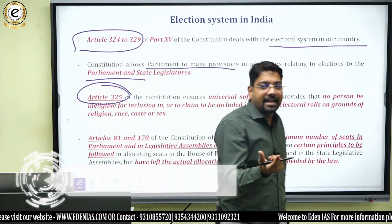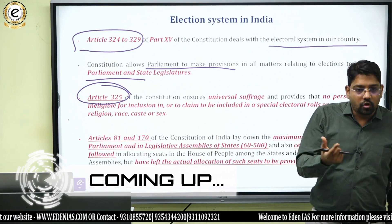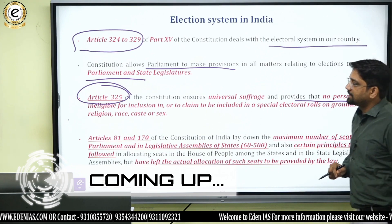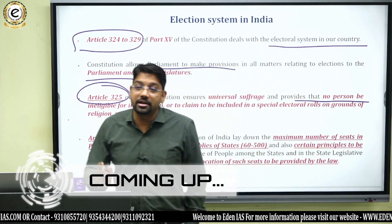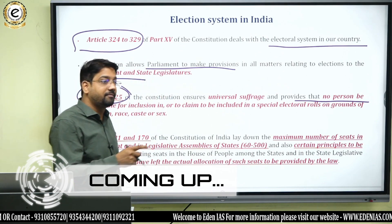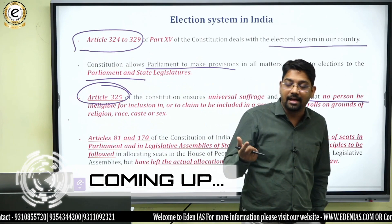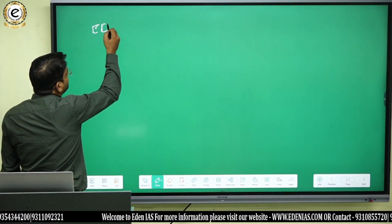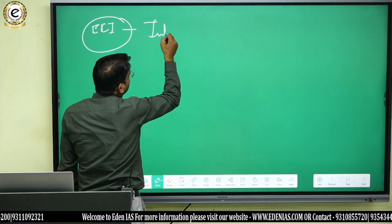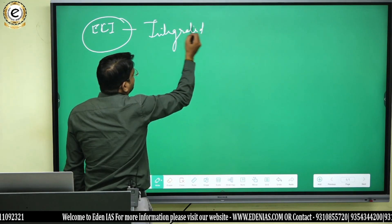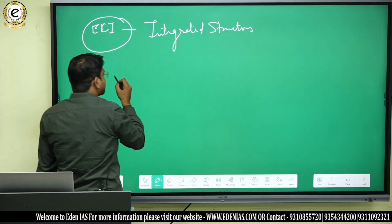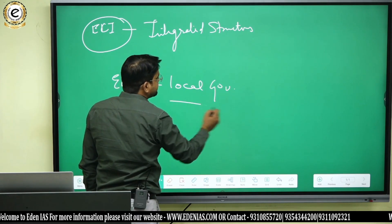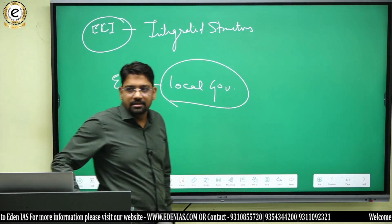Universal suffrage is why the right to vote is our constitutional and legal right. The constitution provides that no person be ineligible, which is why it is mentioned in the constitution. Despite the fact that the Indian Parliament has its own law to regulate elections, the Election Commission of India also has an integrated structure for elections except local governance, which is dealt with by the State Election Commission.